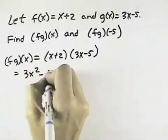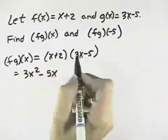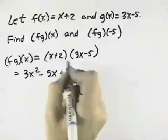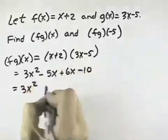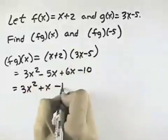x times negative 5 for the outer is negative 5x, 2 times 3x is plus 6x for the inner term, 2 times negative 5 is minus 10. So this gives us 3x squared plus x minus 10.